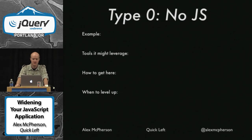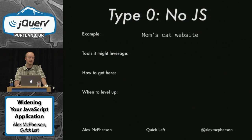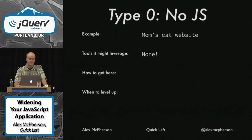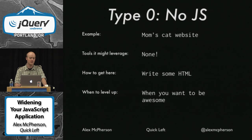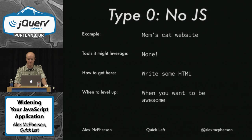The first one — Type Zero, because of course you zero-index everything. An example might be your mom's cat website. Everyone's made a site for someone in their family that's just a couple of static HTML files. Tools it might leverage: none. How to get here: you write some HTML — it's pretty straightforward. When to level up: when you want to be awesome. There are a lot of things you just can't do with static HTML that you obviously need JavaScript for. That's why you're at this conference.